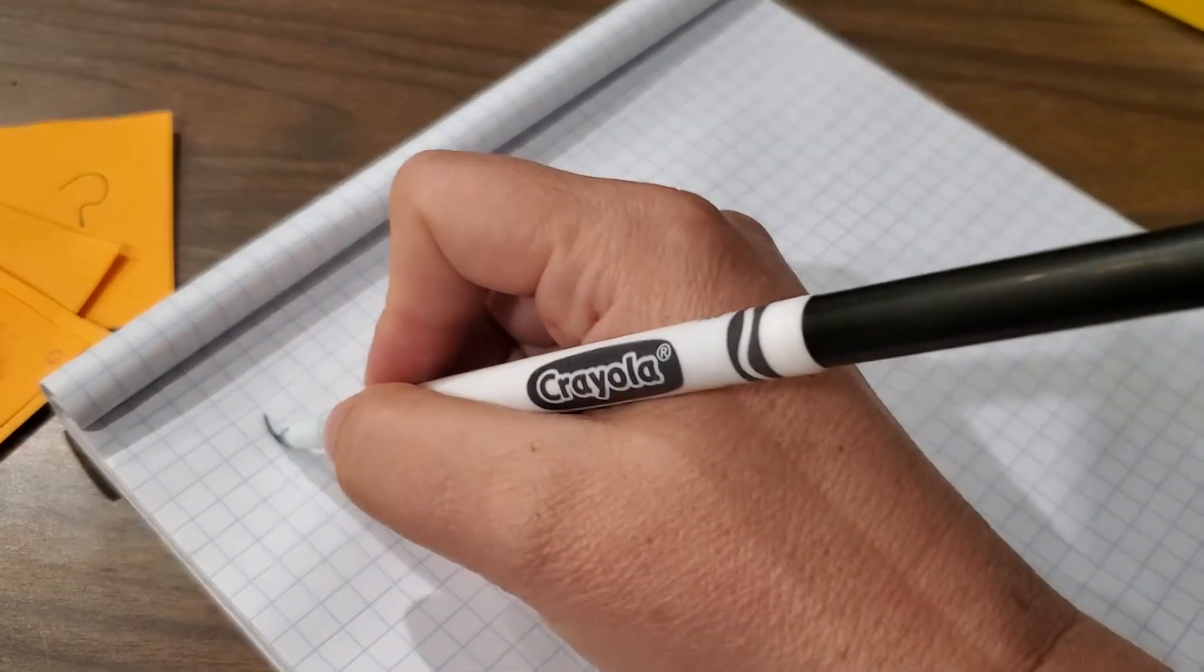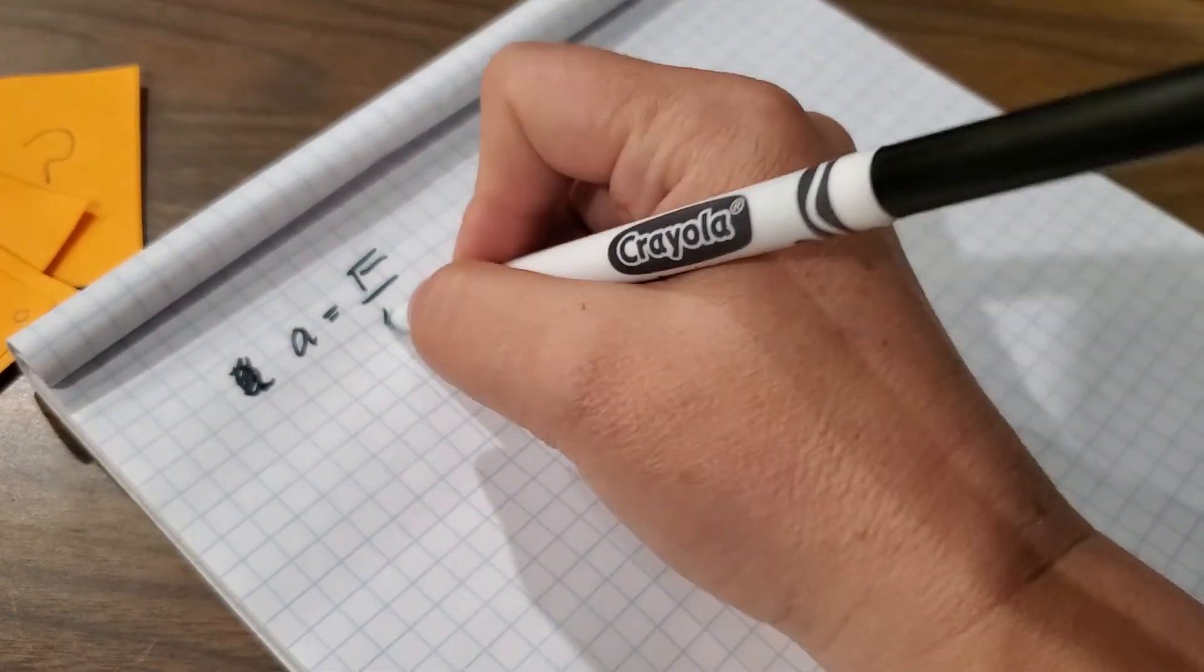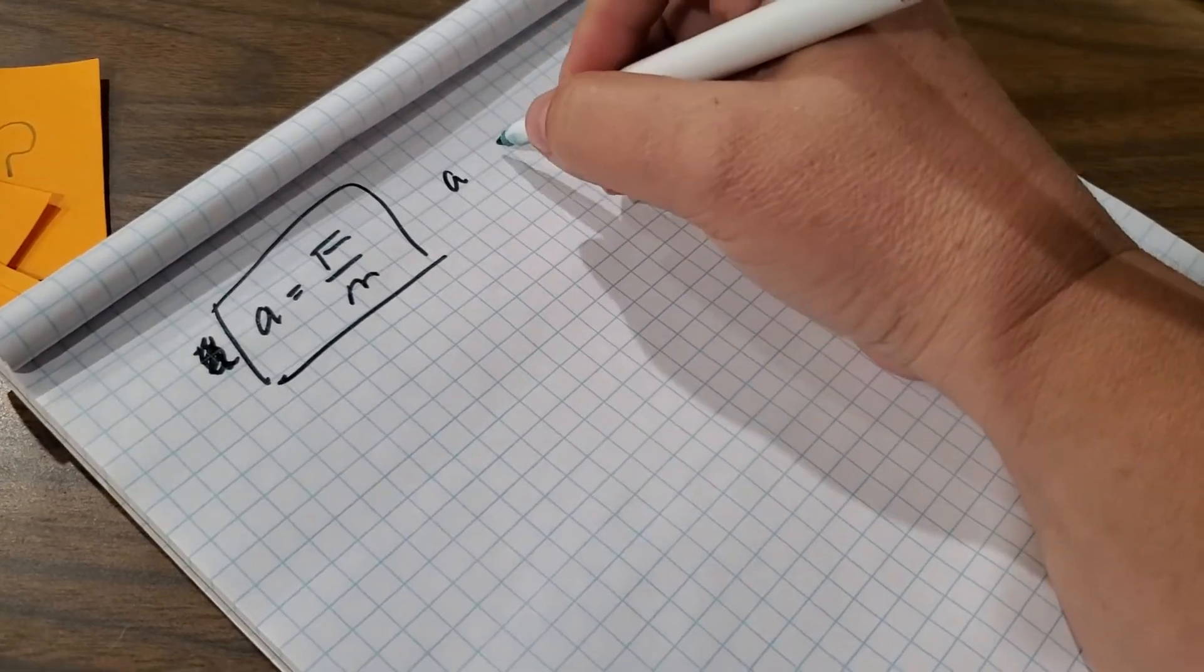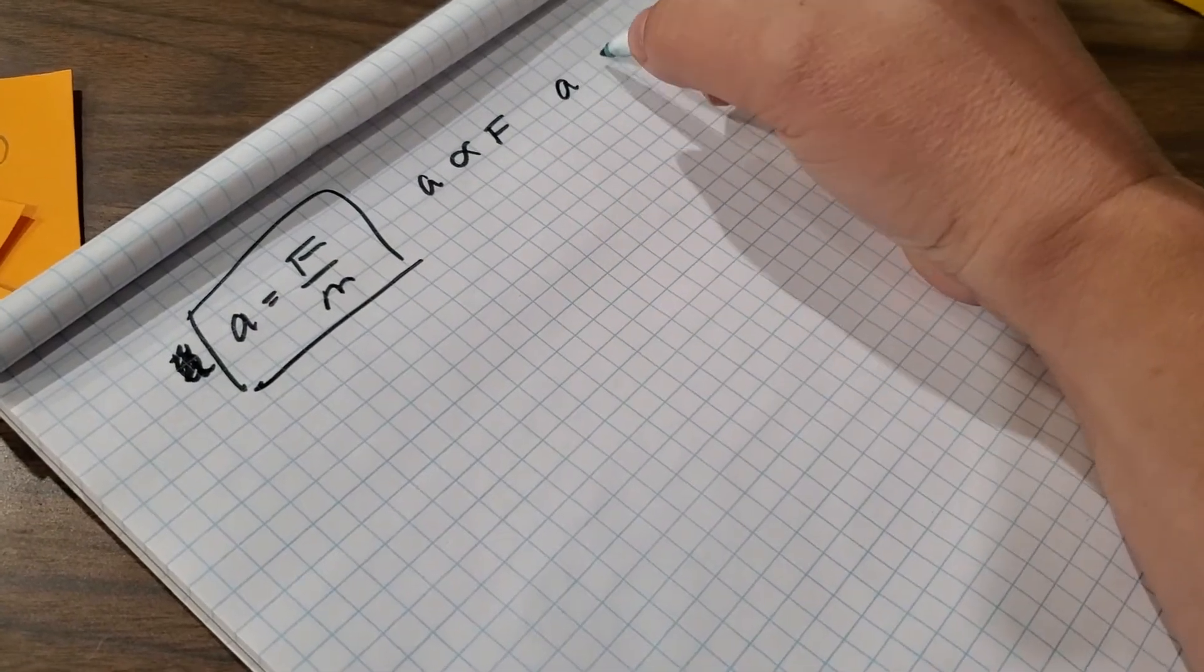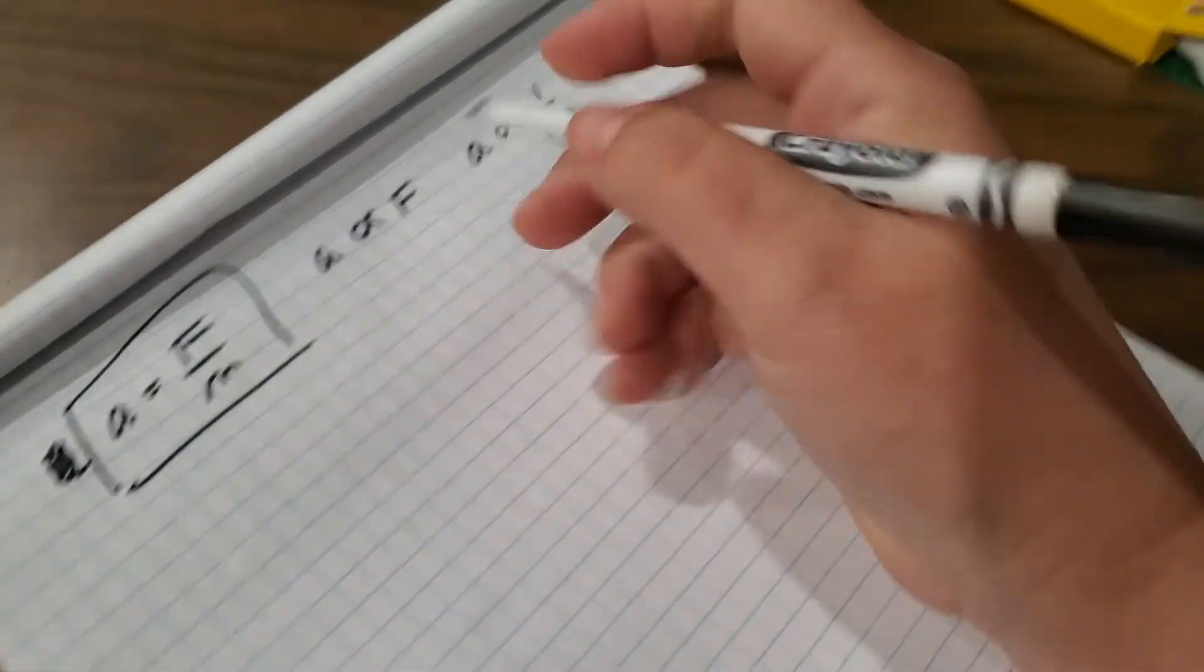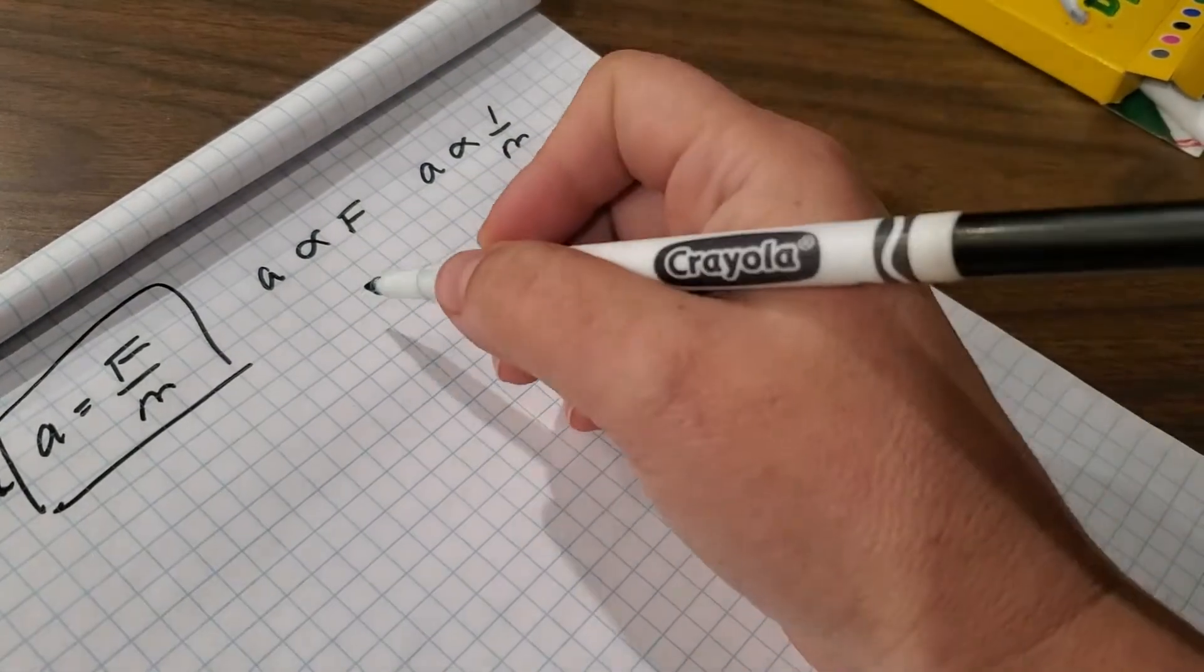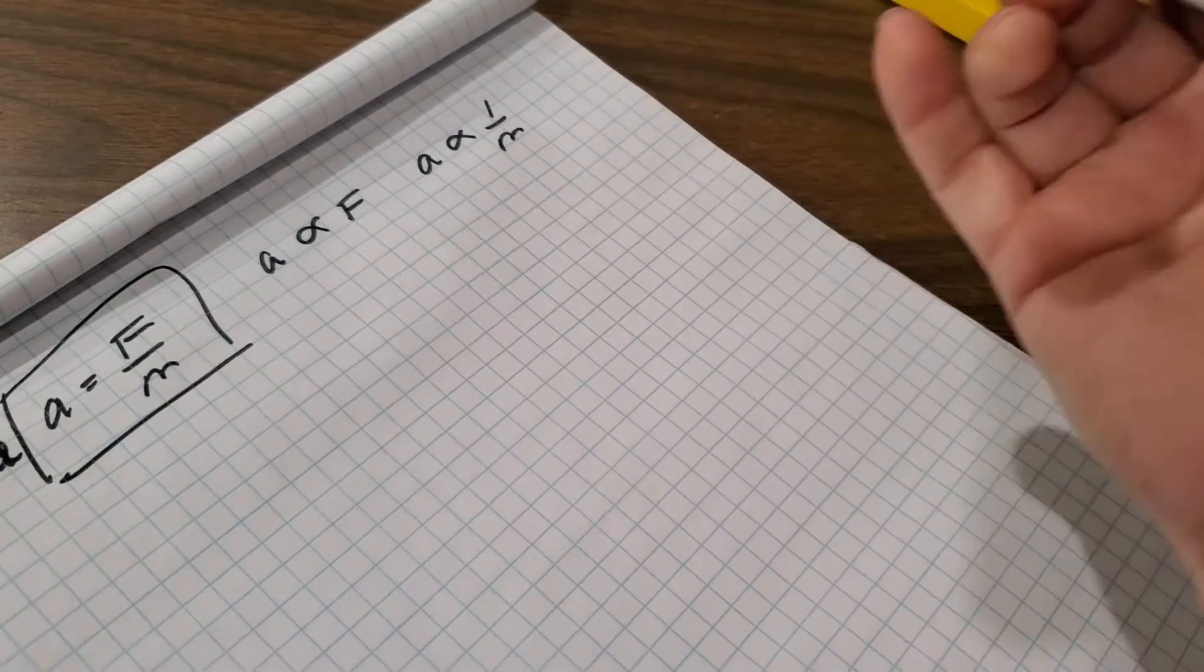Okay, so back in the day we actually started with A is equal to F over M, Newton's second law, right? Well, this is the equation, but we can write it like this. A is proportional to F and we can say that A is proportional to 1 over M, or that A and F have a direct relationship and A and M have an inverse relationship. So these are also related to those graphical relationships that we studied also back in the day.